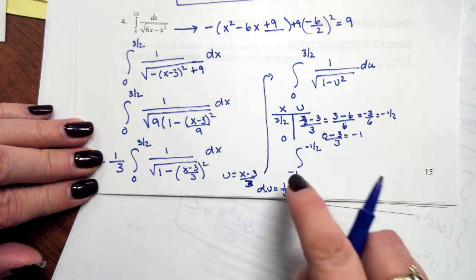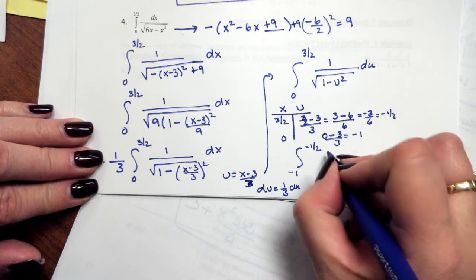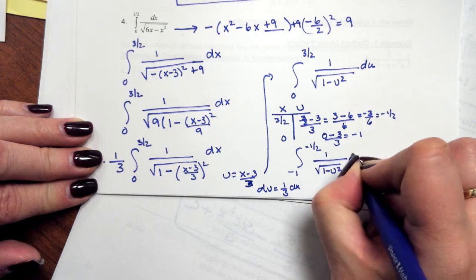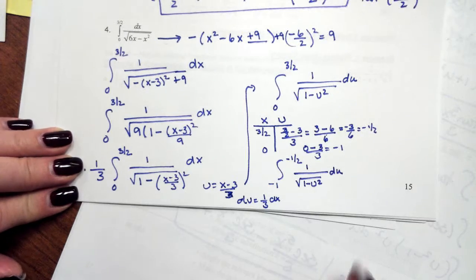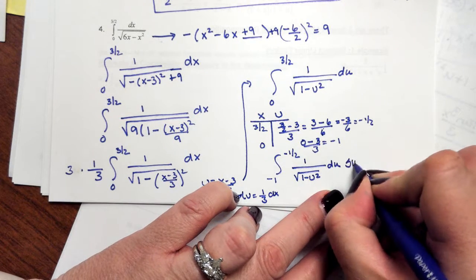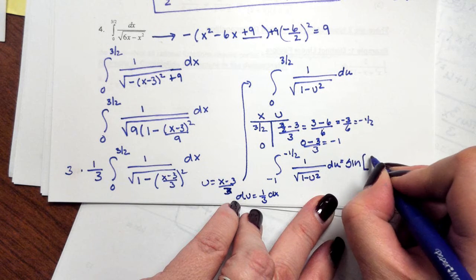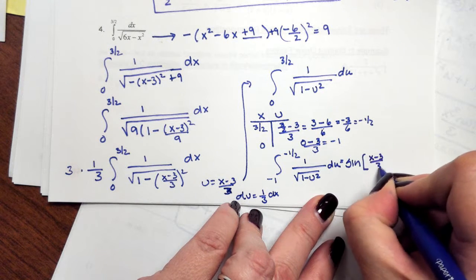So my bounds are now going to be from negative 1 to negative 1 half of 1 over the square root of 1 minus u squared du, which is my inverse sine. And remember u is now my x minus 3 over 3.